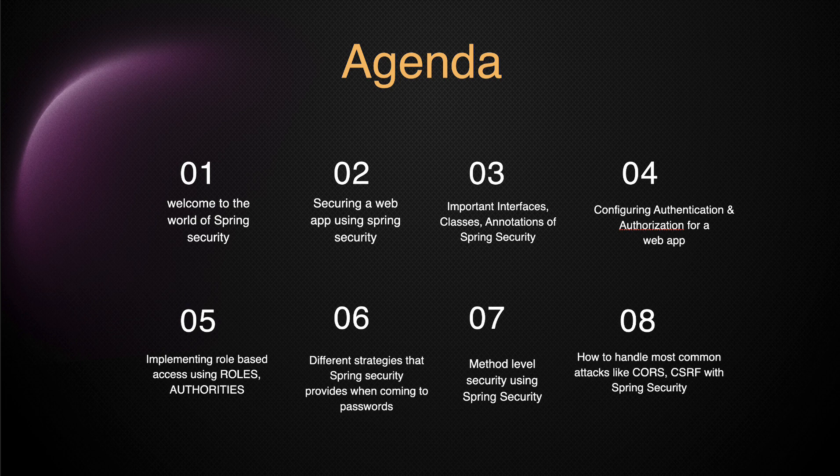In section three, we'll talk about the important classes and interfaces of Spring Security. Then in a later section, we will talk about authentication and authorization of the web app — which classes provide authentication and which provide authorization. We'll also talk about role-based access to APIs and providing security at the method level using roles and authorities.